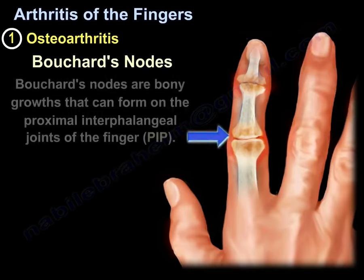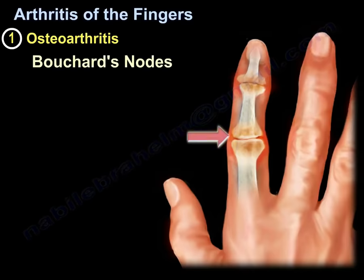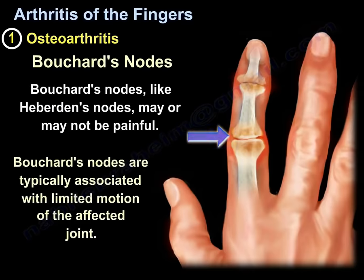Bouchard's nodes are bony growths that can form on the proximal interphalangeal joints of the fingers, which is the PIP. Like Heberden's nodes, Bouchard's nodes may or may not be painful. Bouchard's nodes are typically associated with limited motion of the affected joint.